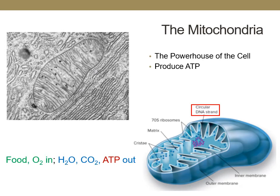Mitochondria are the powerhouse of the cell. They provide the cell with energy in the form of ATP, and the mitochondria are the sites where all metabolic reactions occur in eukaryotic cells. It is thought that the mitochondria were once prokaryotic cells that formed a symbiotic relationship with a larger prokaryote. Evidence includes the inner and outer membrane, which is very similar to gram-negative cells, and a single circular piece of mitochondrial DNA that is also similar to the DNA found in prokaryotic cells.